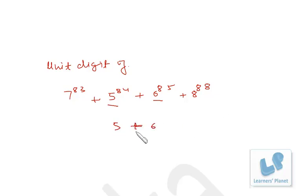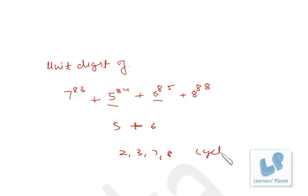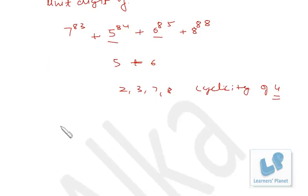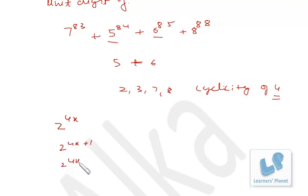Now there are four numbers — 2, 3, 7, and 8 — they follow the cyclicity of 4. You must attend the basic session on unit digit. Cyclicity of 4 means we use the forms: 2 raised to 4x, 2 raised to 4x+1, 2 raised to 4x+2, and 2 raised to 4x+3.